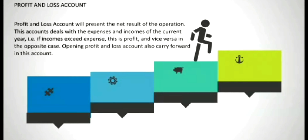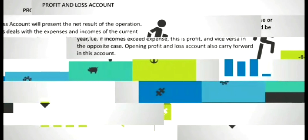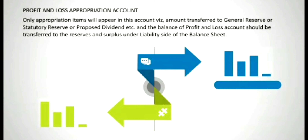Opening profit and loss account balance is also carried forward in this account. Finally, the profit and loss appropriation account is given. Only appropriation items will appear in this account, which is the amount transferred to general reserve or statutory reserve or proposed dividend, etc. The balance of the profit and loss account should be transferred to the reserves and surplus under the liability side of the balance sheet.